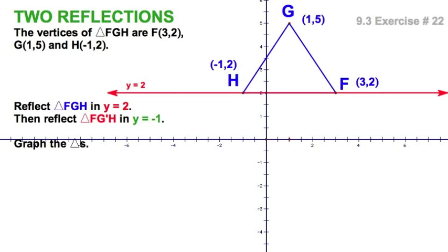The only point that's going to be moving is, of course, G. I can look at that and say, well, let me see, it's 3 units above, so it's going to flip down 3 units below. It's going to look just like that. So there is your first reflection.